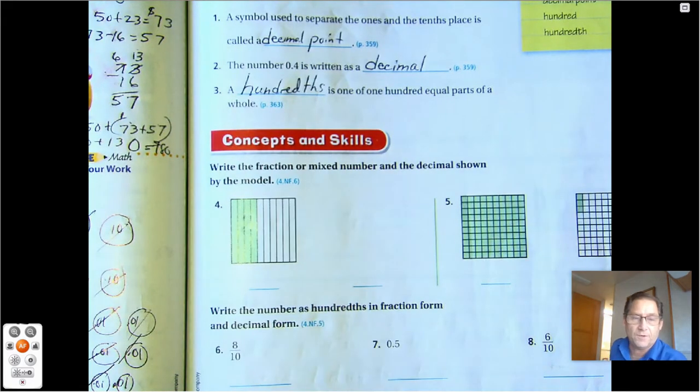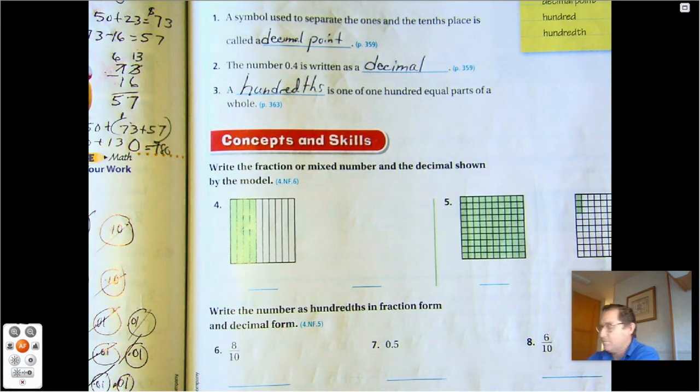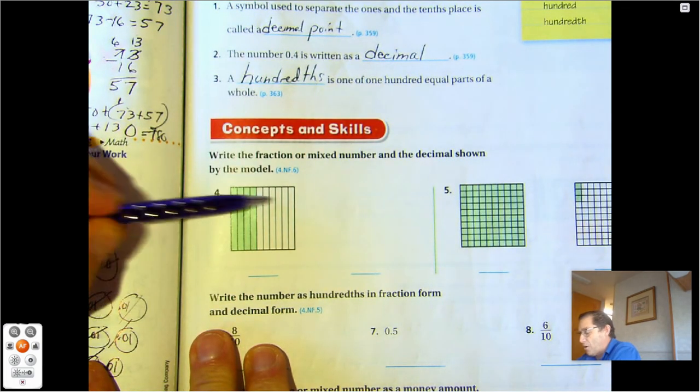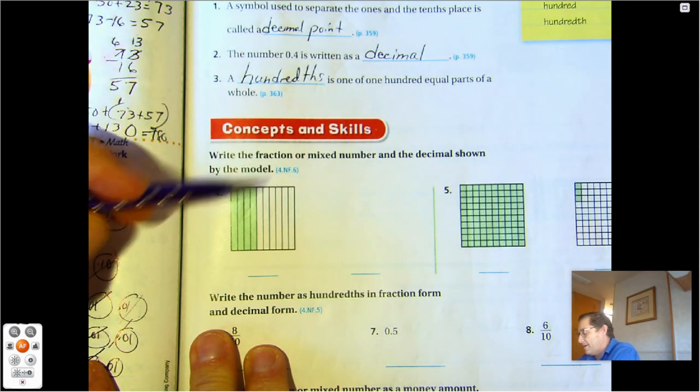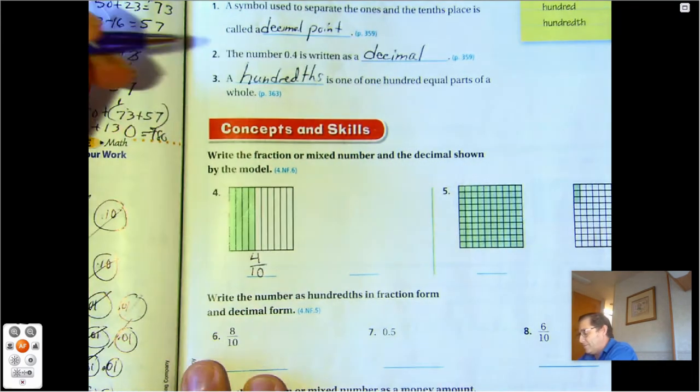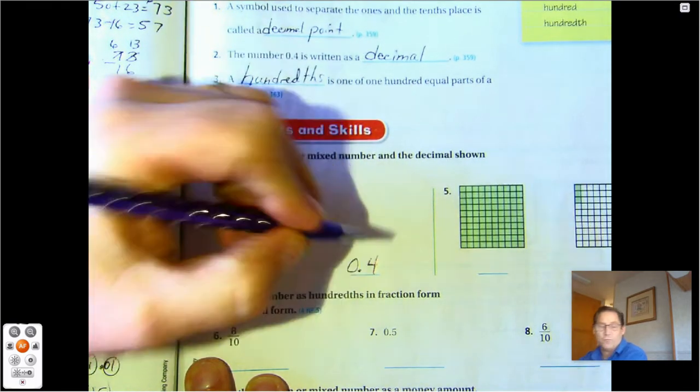Okay, number four. Write the fraction or mixed number and the decimal shown by the model. So we have ten parts and four of them are shaded. So we have four tenths and we would write that as 0.4.